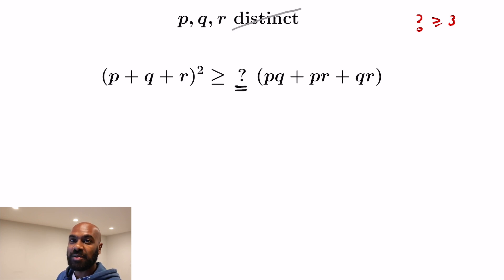So let's assume for a second that we didn't have that they're distinct. Then if we set P and Q and R all equal, we would probably get the best bound that we could. On the left hand side here we would get 9, on the right hand we'd get 3, and so the question mark would actually equal 3. We can't do better than 3 because we have an example where 3 is actually achieved.